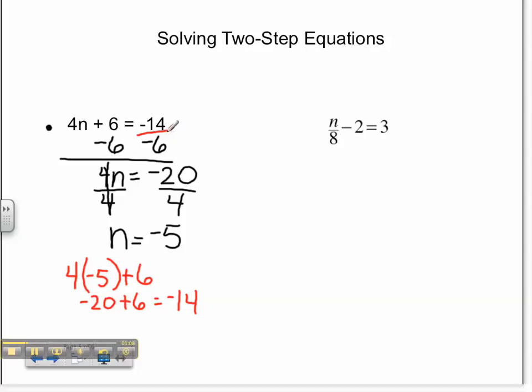Let's move on to number 2. Here we have division and subtraction as our two operations. We're going to begin by adding 2 to both sides of the equal sign to create our balance. We are then left with n divided by 8 equals 5.